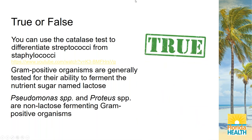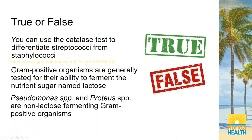The next question: gram-positive organisms are generally tested for their ability to ferment the nutrient sugar named lactose. True or false? This one's going to be false. Gram negatives are the ones you associate with lactose fermenters. When we touch on Enterobacteriaceae, we'll definitely talk more about gram-negative organisms — not this week but the week after. Just keep that in mind.